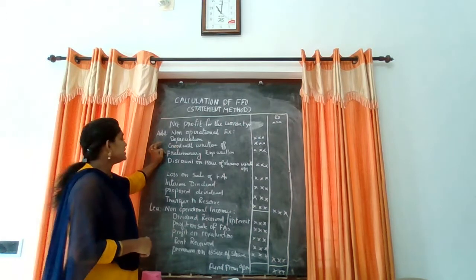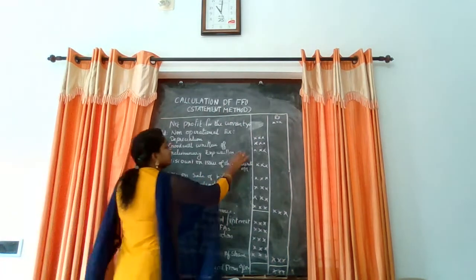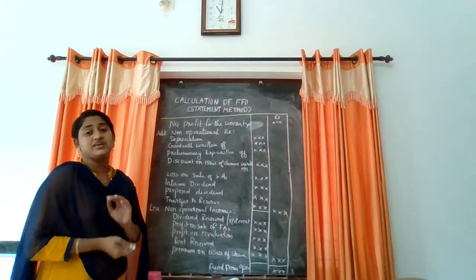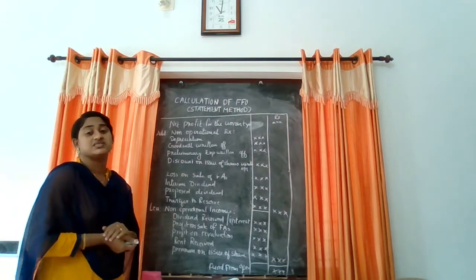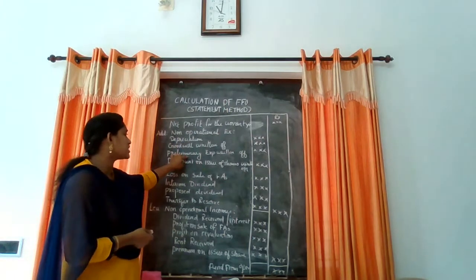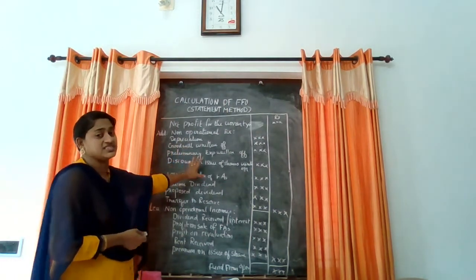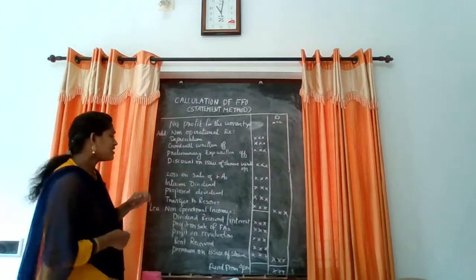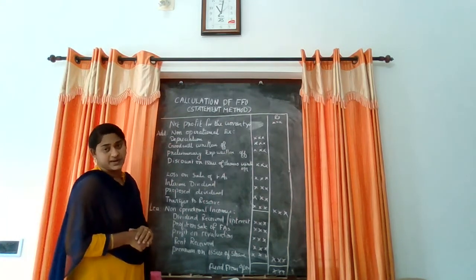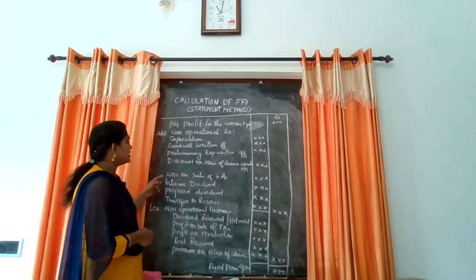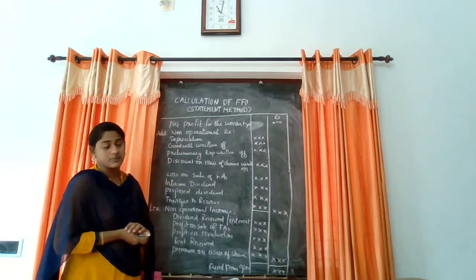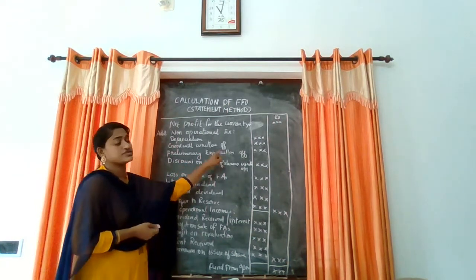The next one is preliminary expenses written-off. These are the expenses incurred before the company is started. The next one is discount on issue of shares written-off.